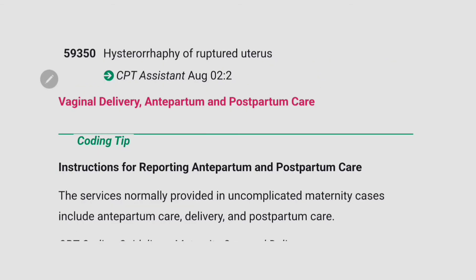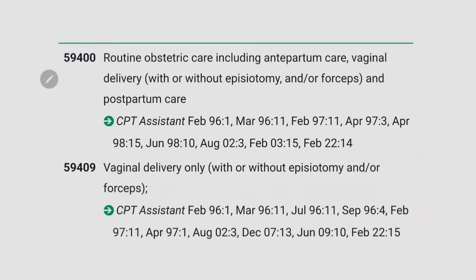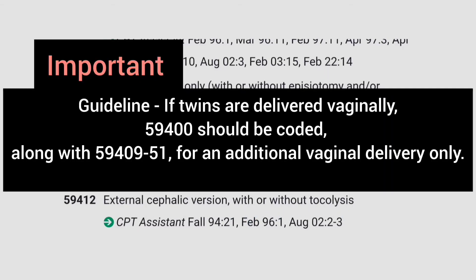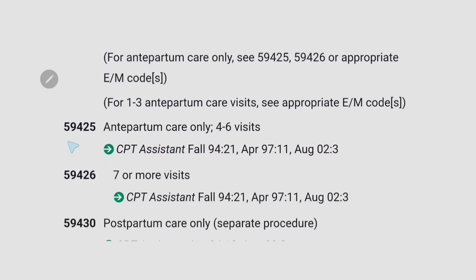The next important section is vaginal delivery, antepartum and postpartum care. The code 59400 is for routine obstetric care including antepartum care, vaginal delivery, and postpartum care. 59409 is for vaginal delivery only — highlight that. 59410 is for vaginal delivery including postpartum care. The code 59412 is for external cephalic version with or without tocolysis. An important guideline: if twins are delivered vaginally, 59400 should be coded along with 59409 with modifier 51 for an additional vaginal delivery only.